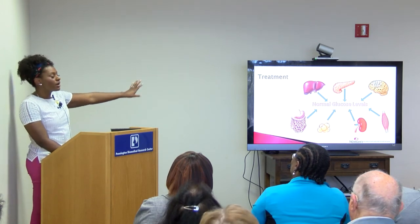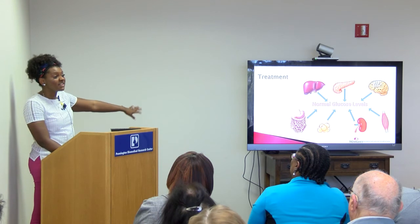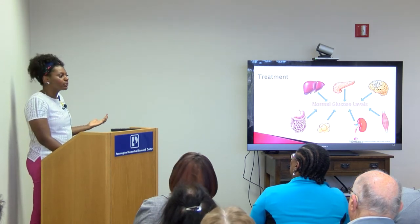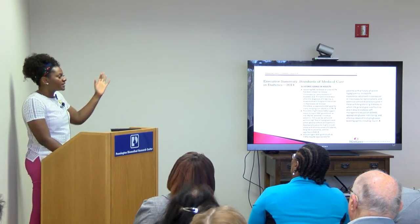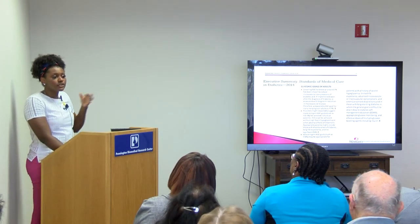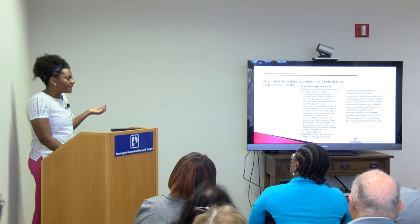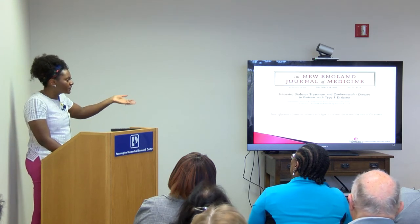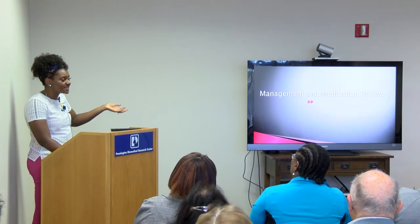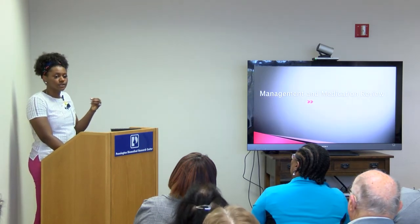If we know all these organs work together to control or worsen your blood sugar levels, then if we target these organs, maybe we can help improve your blood sugar levels. The goal for your A1C once you're diagnosed with diabetes is less than 7. Several studies have shown that when you're below 7, you're less likely to have complications in the future.